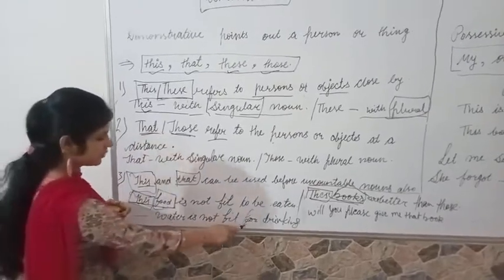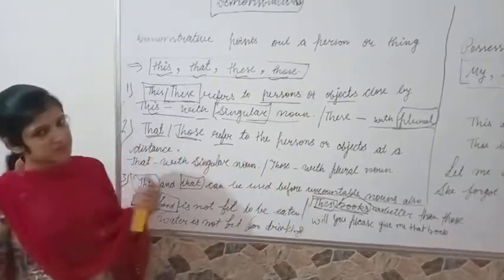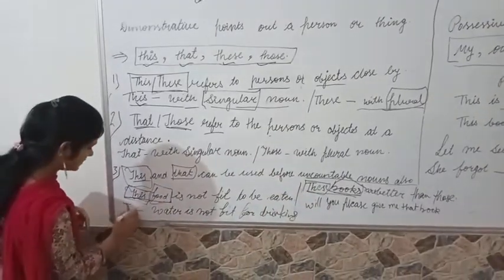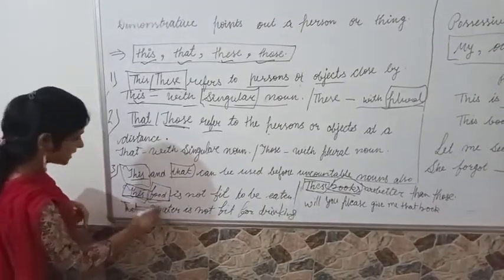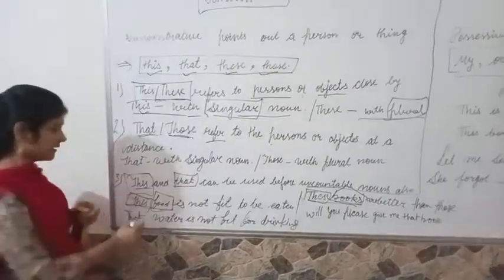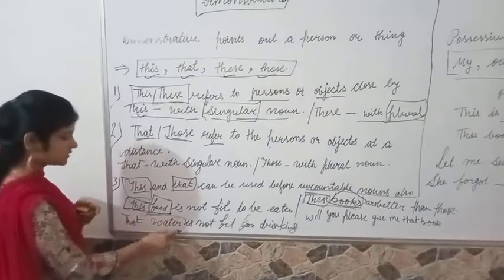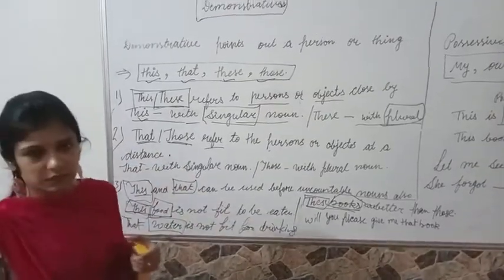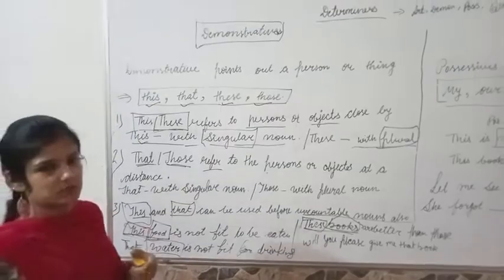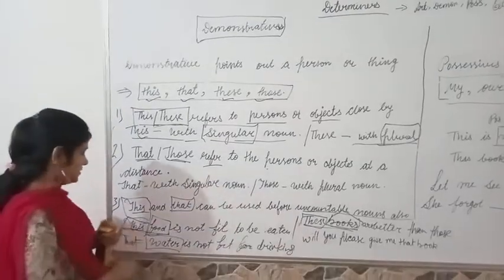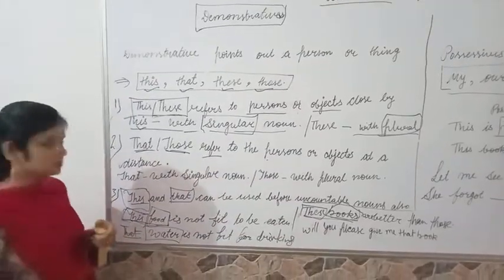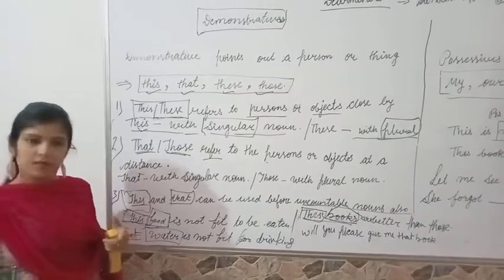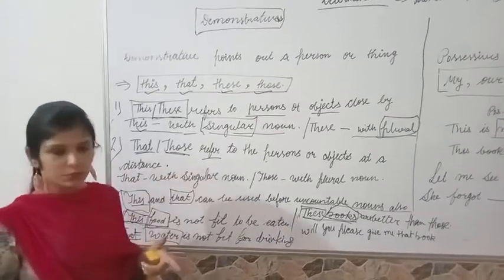'That water is not fit for drinking.' Can we count water? No. We can only measure it; it cannot be counted. So before these types of uncountable nouns, 'this' and 'that' demonstratives can be used.